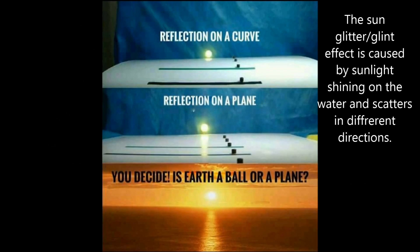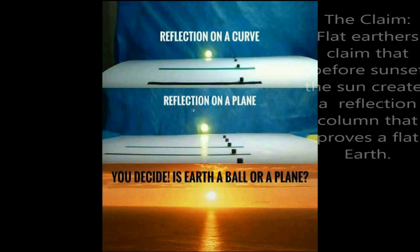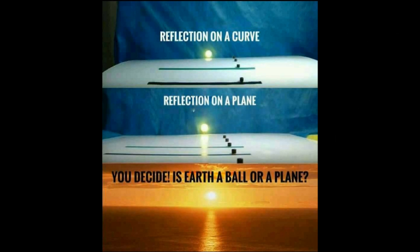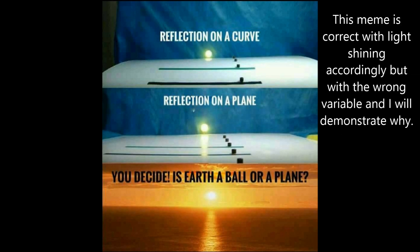The sun glitter effect is caused by sunlight shining on the water and scattering in different directions. Flat earthers claim that before sunset the sun creates a reflection column that proves a flat earth. This meme is correct with the light shining accordingly but with the wrong variable, and I will demonstrate why.